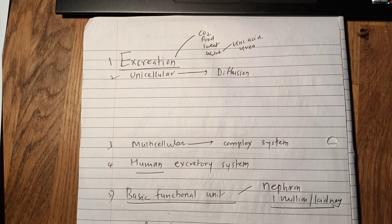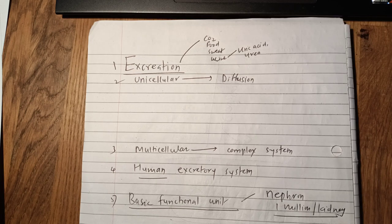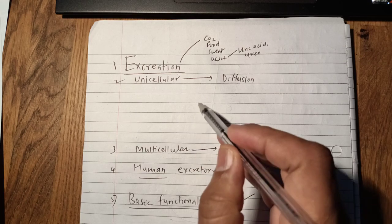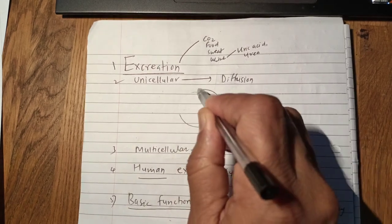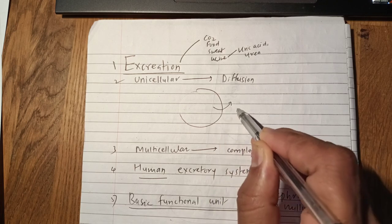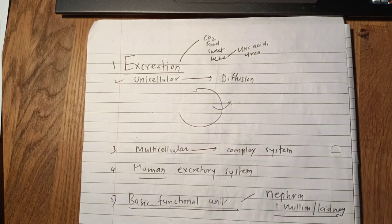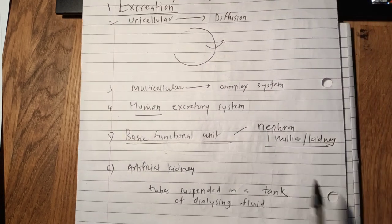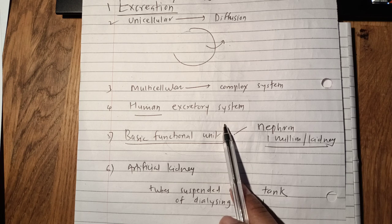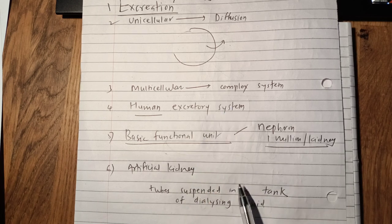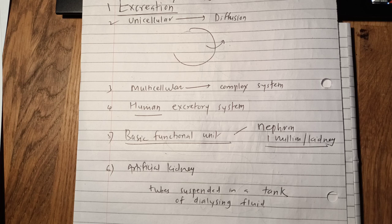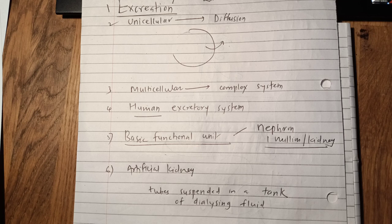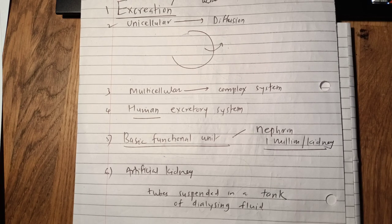Different organisms have different ways of getting rid of harmful waste products. Unicellular organisms excrete by simple diffusion from inside to the outside. But multicellular organisms have a more complex excretory system, such as human beings, and they have a specialized excretory system — that is the urinary system.